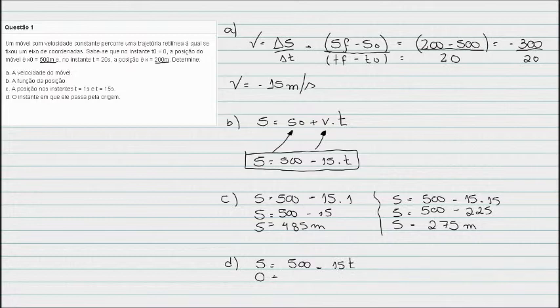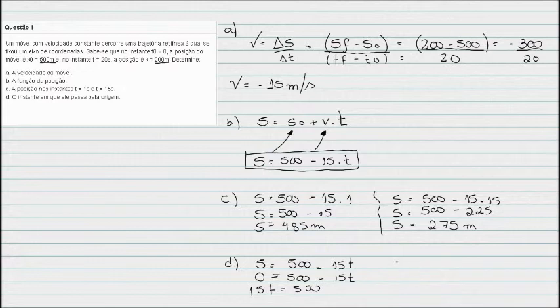A origem é 0, posição 0: 500 menos 15T. Como eu quero achar o tempo, eu preciso isolar esse tempo. Ele está negativo, eu vou jogar ele lá para o outro lado. Ele vai passar positivo, vai ficar assim: 15T igual a 500. Para achar esse tempo agora, o 15 que estava multiplicando eu vou passar ele dividindo.